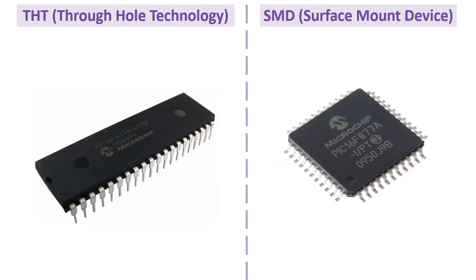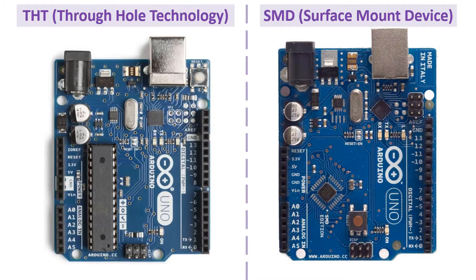For example, on the left there is the THT type of the PIC 16F877A model microchip controller belonging to Microchip company, while on the right there is the SMD model IC of the same model belonging to the same company. Likewise, on the left on the Arduino UNO development board there is a THT type microcontroller of Atmel company, while on the right there is an SMD model IC of the same company.